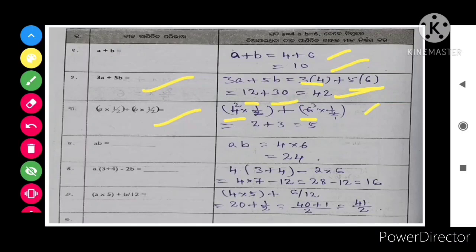So you will get 2 plus 3 is equal to 5. For the next problem, a b is equal to s, so a b means a into b. So 4 into 6, that is equal to 24.